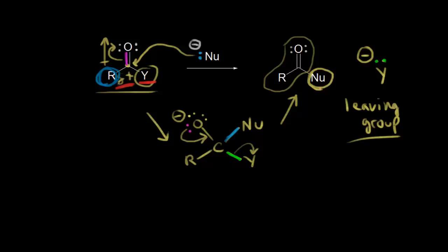Thinking about the R group on our carboxylic acid derivative: if the R group was a methyl versus a tert-butyl, the tert-butyl group would have increased steric hindrance — it's much bigger — and that could prevent the nucleophile from attacking. So steric effects are something to think about. The strength of the nucleophile is another consideration; you want a strong nucleophile to attack your carbonyl carbon. In this video we're going to focus mostly on the leaving group — the stability of the leaving group. You want something stable with a negative one formal charge; it's much more likely to leave if it's stable.